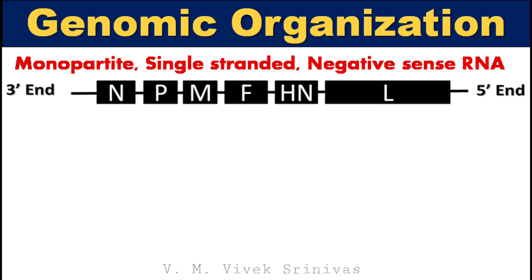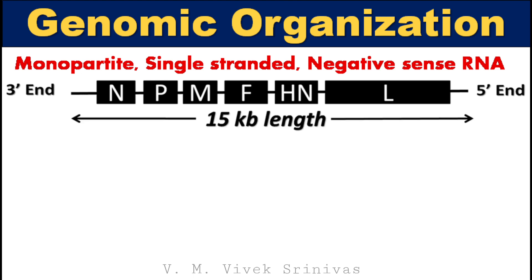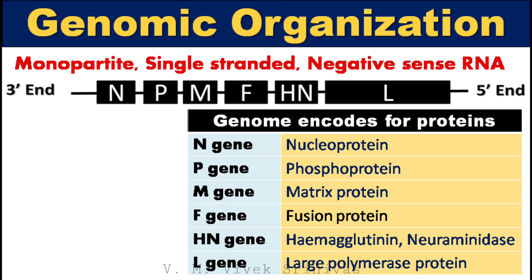Genomic organization. The genome is monocistronic, single-stranded, and negative-sense RNA. The genome length is 15 kilobase pairs. The viral genome encodes proteins namely nucleoprotein, phosphoprotein, matrix protein, fusion protein, hemagglutinin, neuraminidase, and polymerase enzyme.